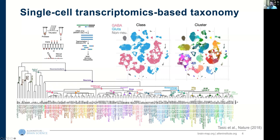In the GABAergic arm of the transcriptomic tree, major branches correspond to parvalbumin, somatostatin, VIP, and LAMP5 — major inhibitory cell markers. On the glutamatergic side, branches correspond to laminar location and projection patterns such as intratelencephalic, pyramidal tract, or corticothalamic. Below that level, there are around 100 different cortical neuron types, raising the question of whether they correspond to specific properties in other modalities like intrinsic physiology or morphology.